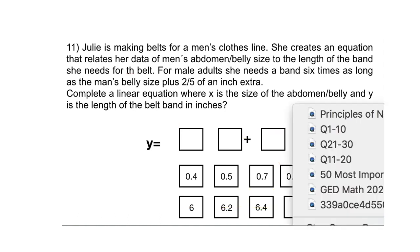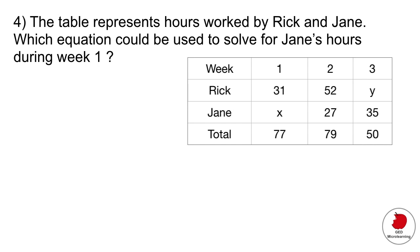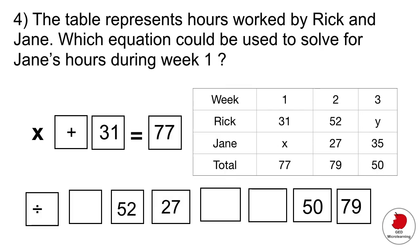The question says the table represents hours worked by Rick and Jane. Which equation could be used to solve for Jane's hours during week one? Jane and Rick together worked 77 hours and we know from the table that Rick worked 31 hours, but we don't know how many hours Jane worked so she would be x. That would be your equation. Then you would drag those elements from the answer option below to form your equation.